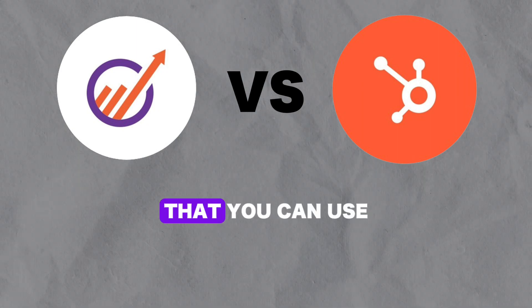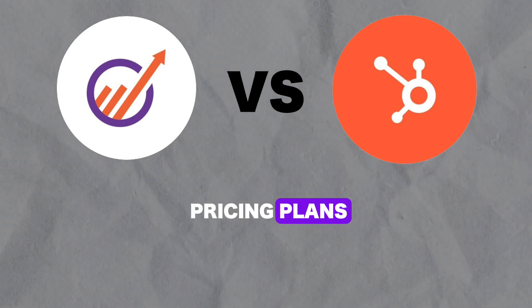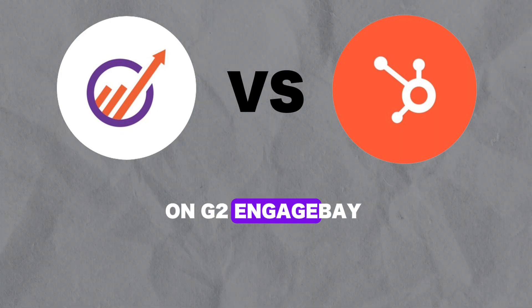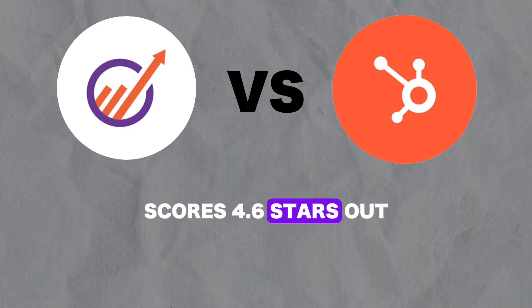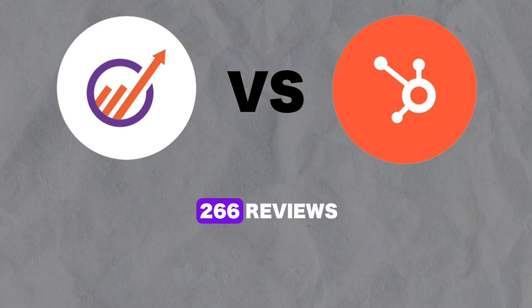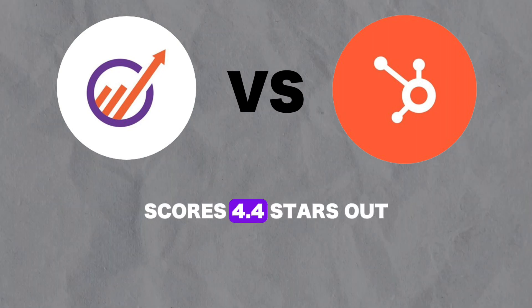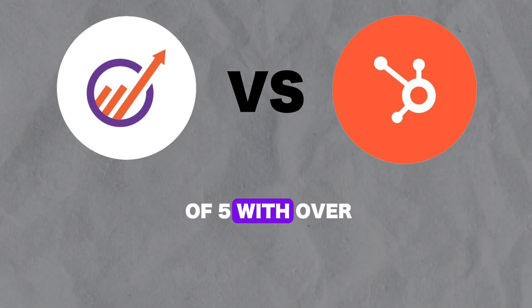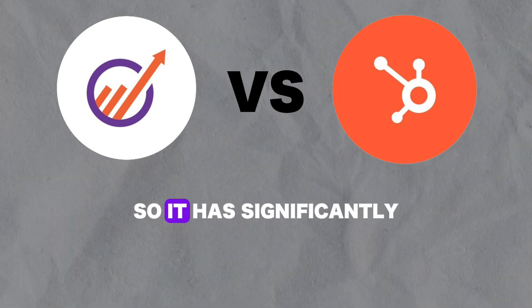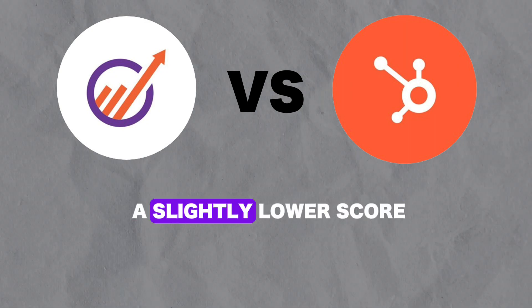I'll leave a link in the description that you can use to check out their pricing plans. Now, one category that I like to take a look at when making a decision like this is customer reviews, because what better way is there to find out which product is better than to look at the opinions of hundreds of experienced users. On G2, EngageBay scores 4.6 stars out of 5 with over 266 reviews. HubSpot, on the other hand, scores 4.4 stars out of 5 with over 11,000 reviews, so it has significantly more reviews with a slightly lower score.